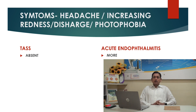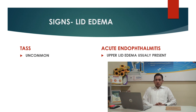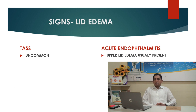Symptoms like headache, increasing redness, discharge, and photophobia are more common in endophthalmitis and are usually absent in TASS. Lid edema is usually present in actual endophthalmitis cases, while lid edema in TASS is usually absent.